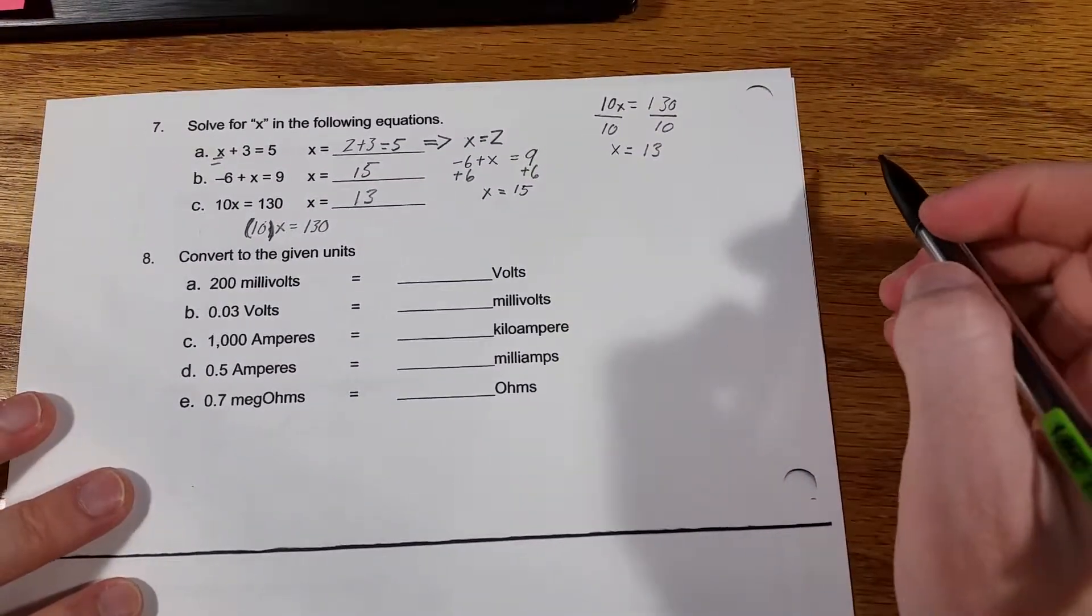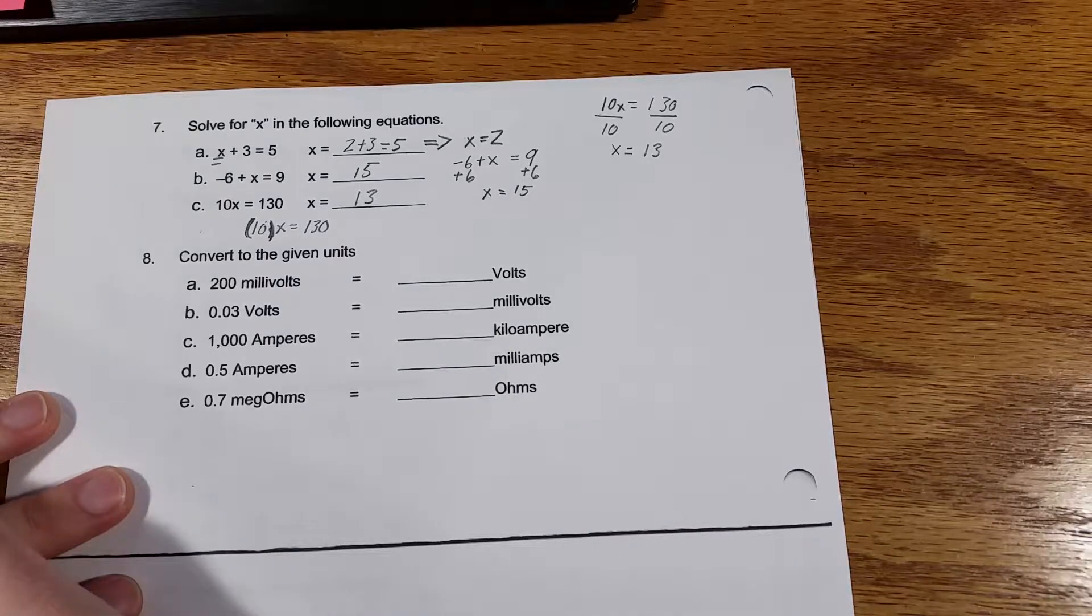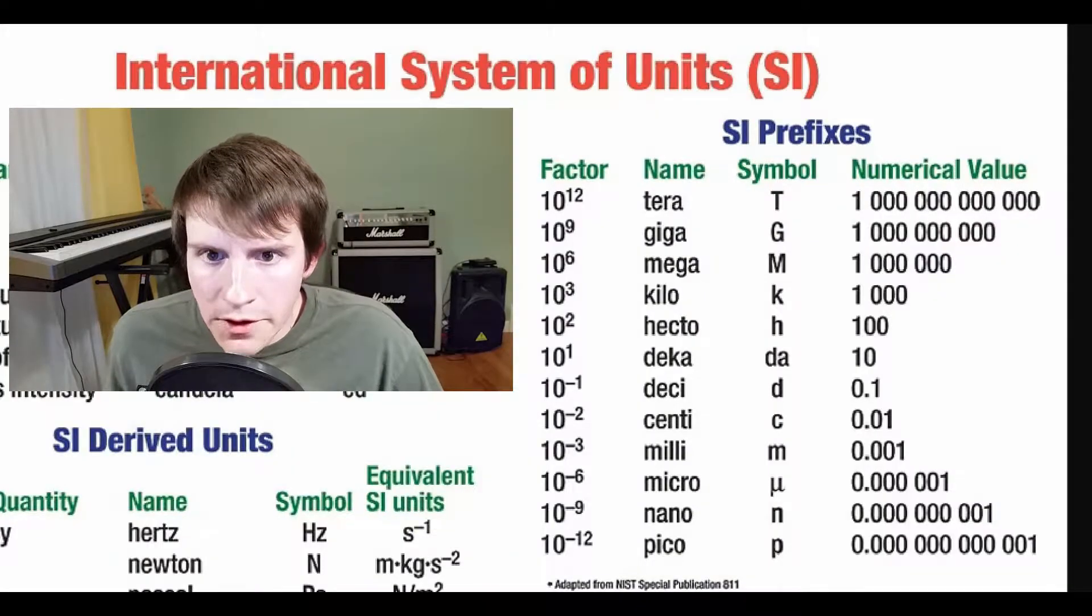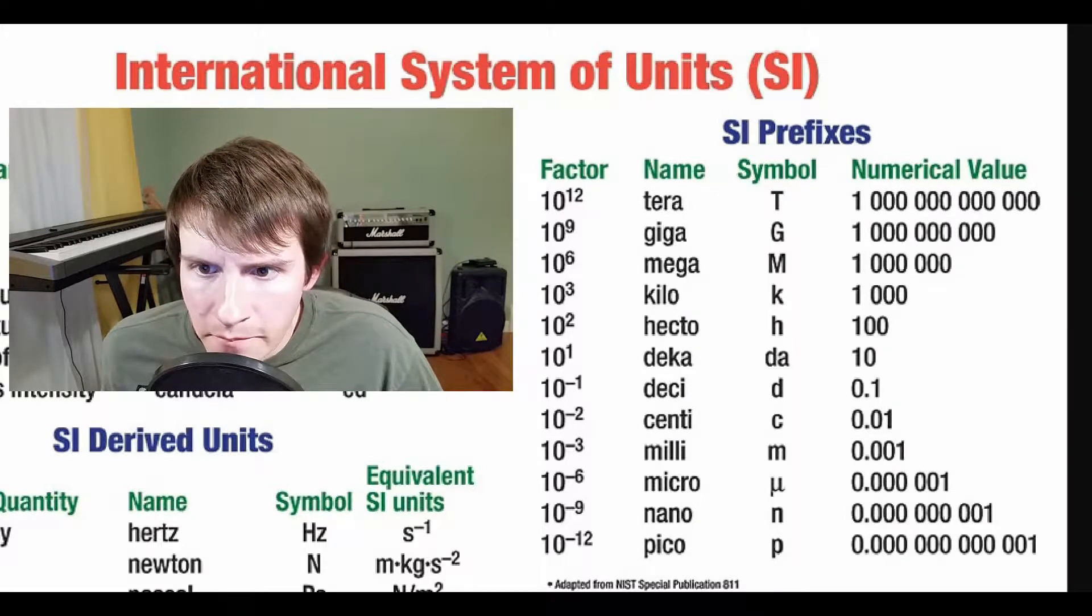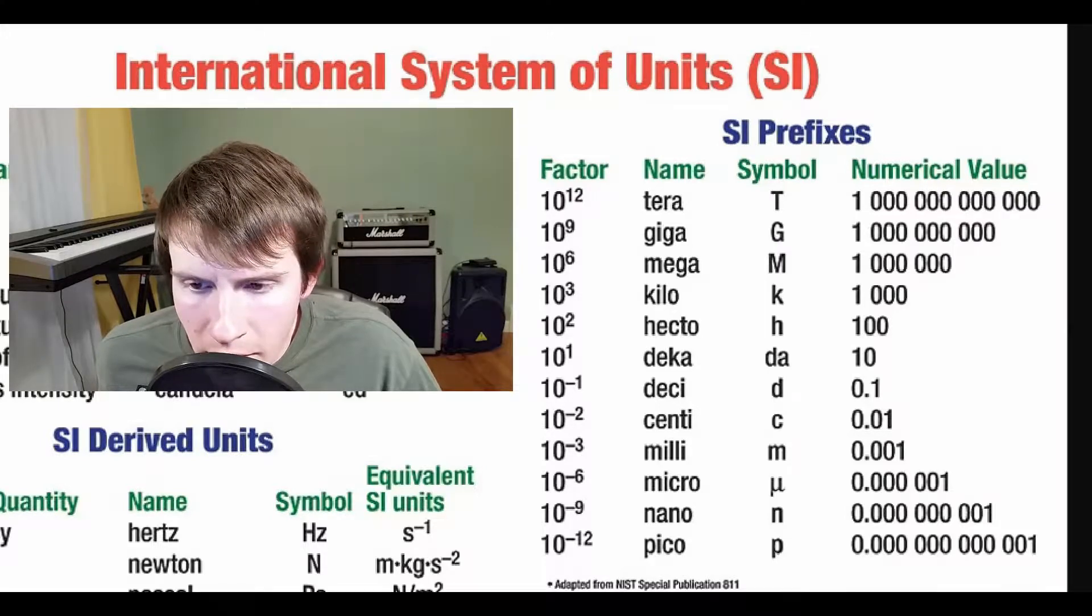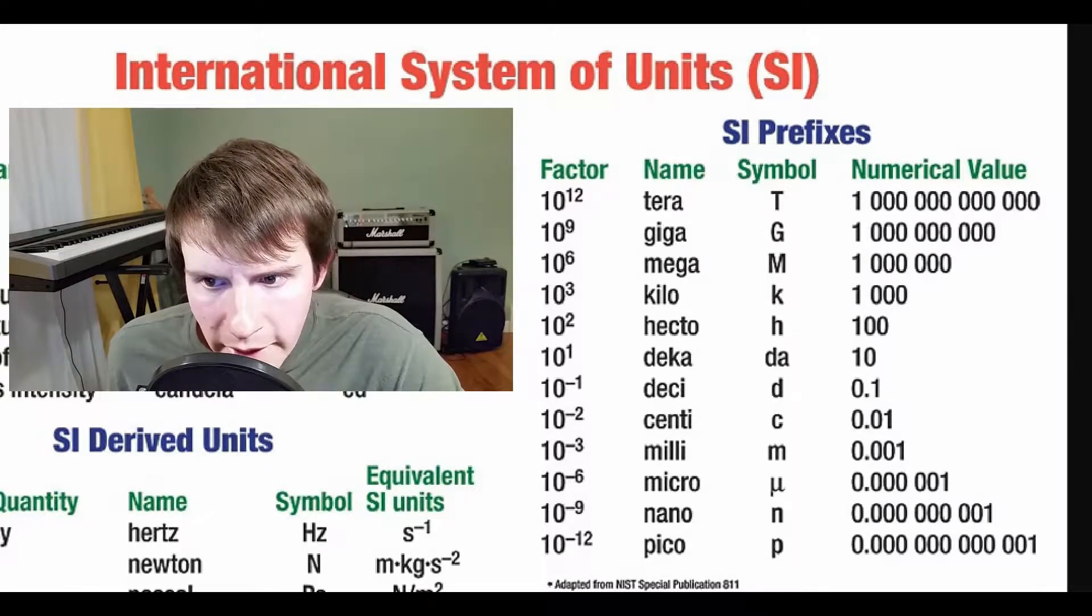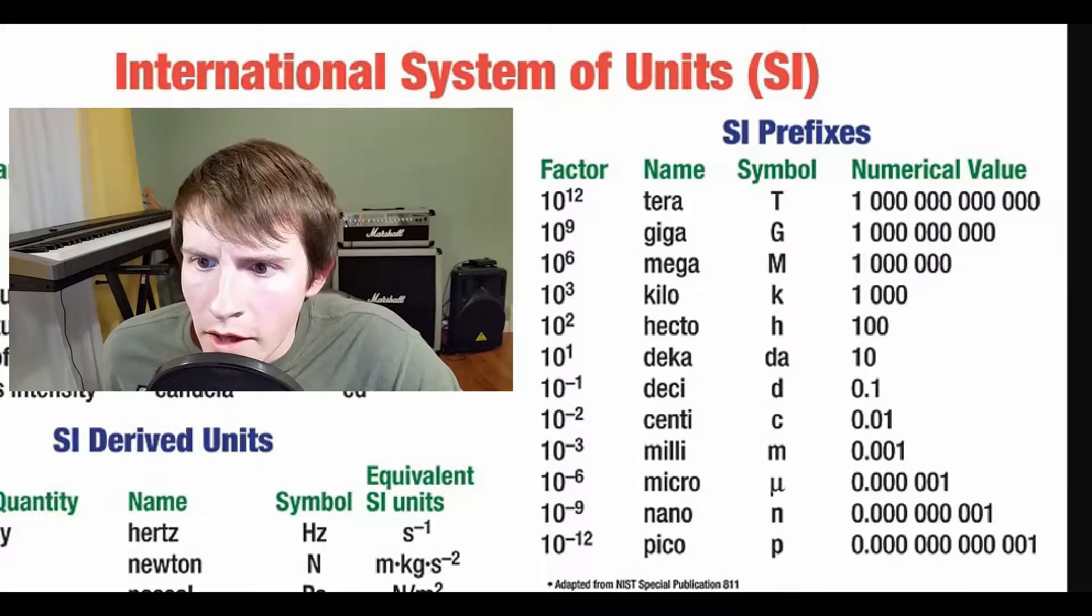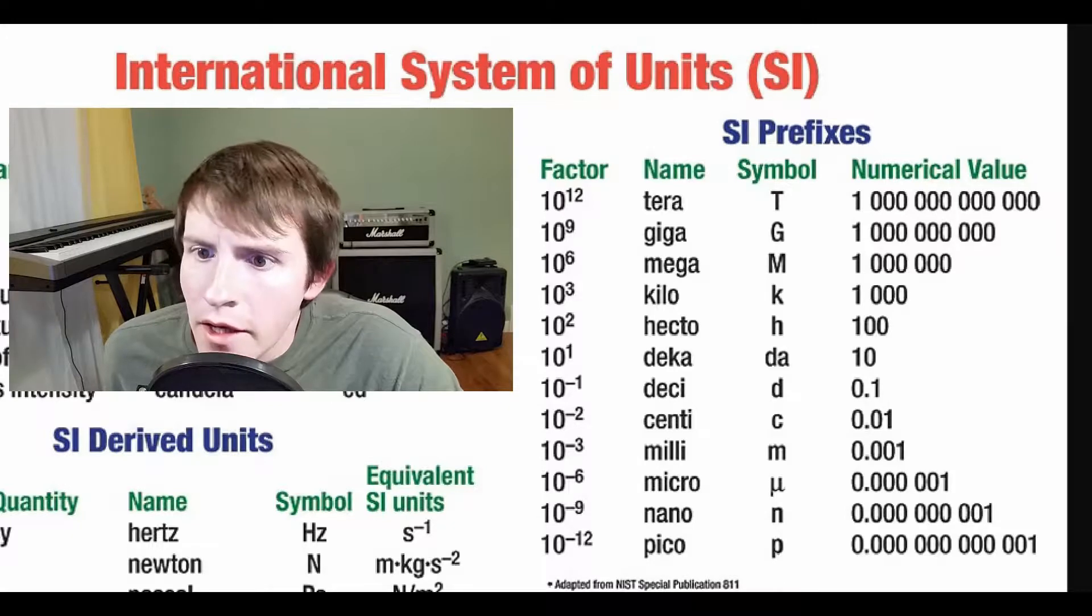Number eight, convert to the given units. So starting out, we have 200 millivolts, and it's asking us, how many volts is that? And I'm going to show you this table before we get started on this and explain what it is. Okay, so if you've never seen it, this is the SI prefixes chart. On the left, it tells you the factor. Next, it says the name. Then there's the symbol, and then there's the numeric value. So essentially, these are useful for converting large into smaller units, or vice versa. And these all relate back to the value 1. So if you have a 1 kilo amp, that means you have 1,000 amps. If you have 1 mega amp, that means you have 1,000,000 amps, gigatera, and so on.